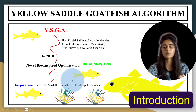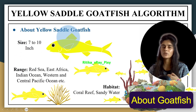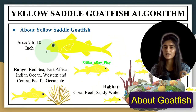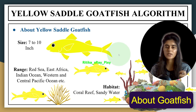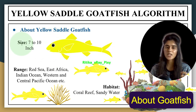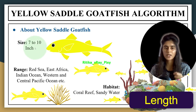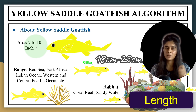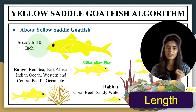Yellow saddle goatfish are golden yellow in color from head to tail and are easily recognized by their variant colors and unique body shapes. In terms of size, they typically grow to a length of 7 to 10 inches, that is 18 to 25 centimeters, in the wild, but their length may be slightly smaller in captivity.